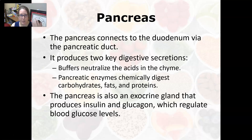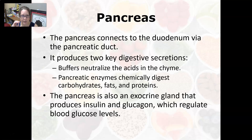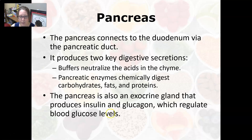The pancreas also functions as both an exocrine and an endocrine gland. The exocrine function is the production of digestive enzymes released into the gut tube. The endocrine function involves producing the hormones insulin and glucagon, which help regulate blood glucose levels. Insulin helps move glucose from the bloodstream into cells, lowering blood glucose when it is high. Glucagon releases stored glucose from the liver when blood sugar is low, such as in a fasted state.